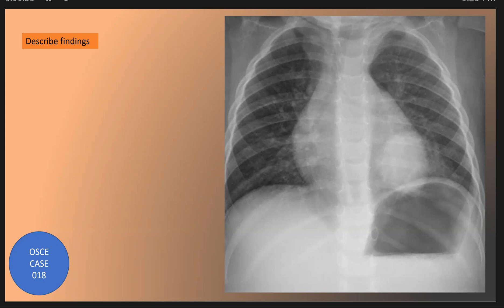This is a new risky case, and the number is 18. Here we have some questions. This is a child's chest X-ray in a standing position, as we see gastric air flow at the end. What are the radiological findings?